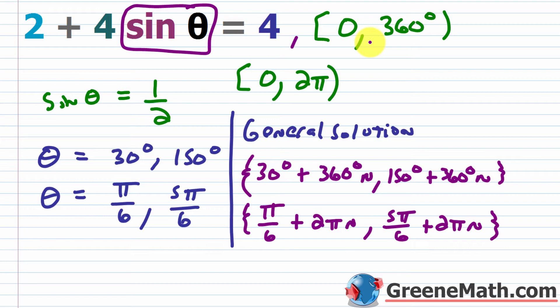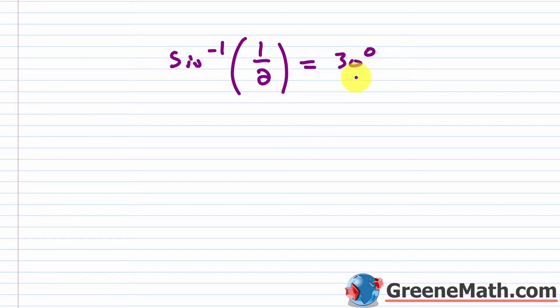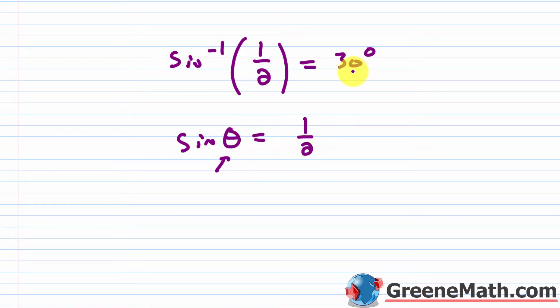Now let's talk about another way to get this answer using the inverse sine function. If you look on your calculator and do inverse sine of 1/2, you'll get only one value: 30 degrees. But for sine of theta equals 1/2, there are infinitely many angle measures that work. With one answer, you can find all of them. Sine is positive in quadrants 1 and 2.